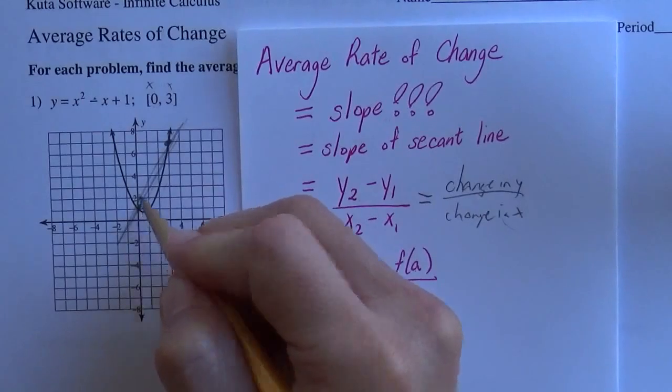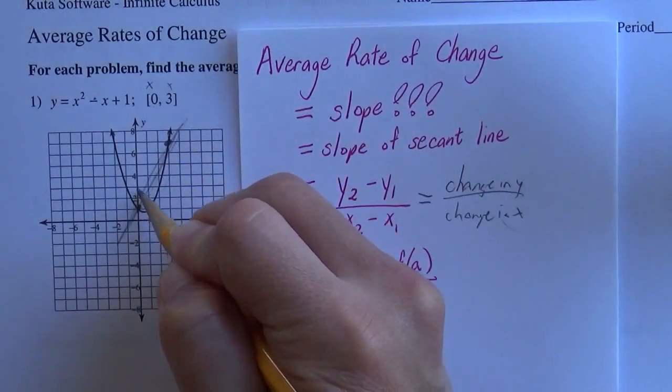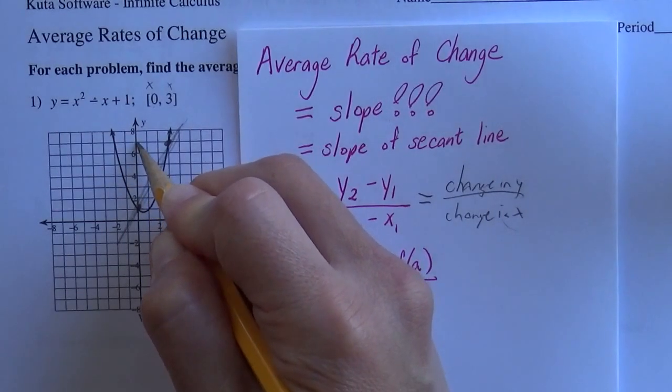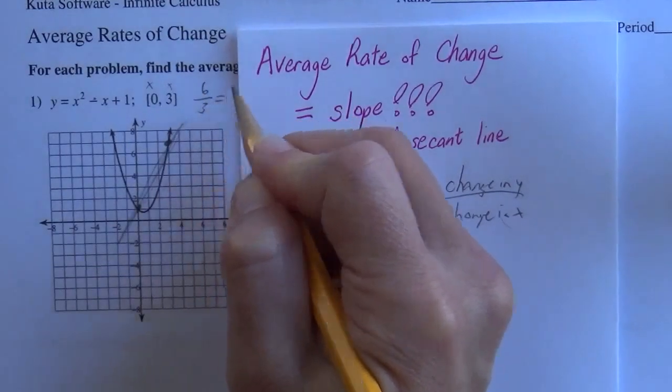All I need to do is count. They've got it graphed. To get from this point to that point, I went up 1, 2, 3, 4, 5, 6, and over 1, 2, 3. So your slope is 6 over 3 is 2.